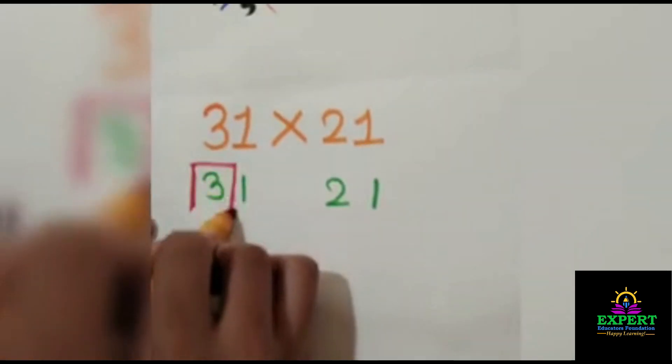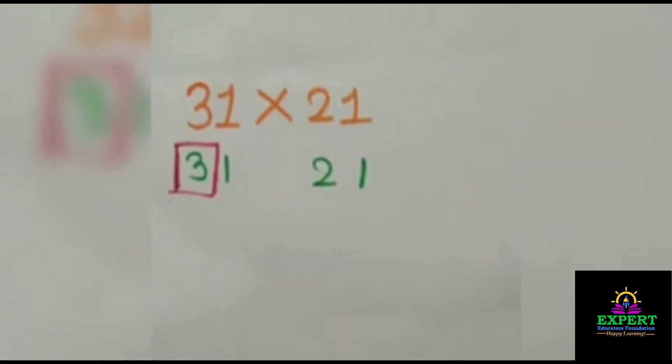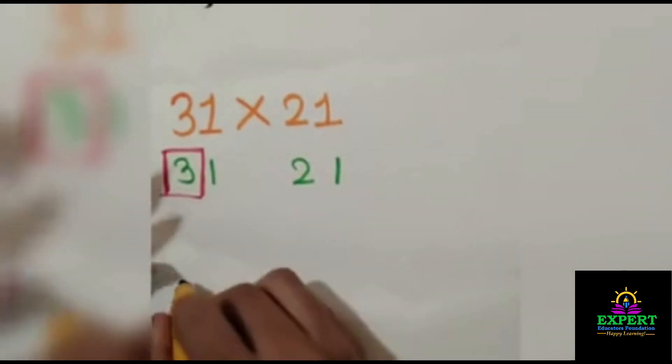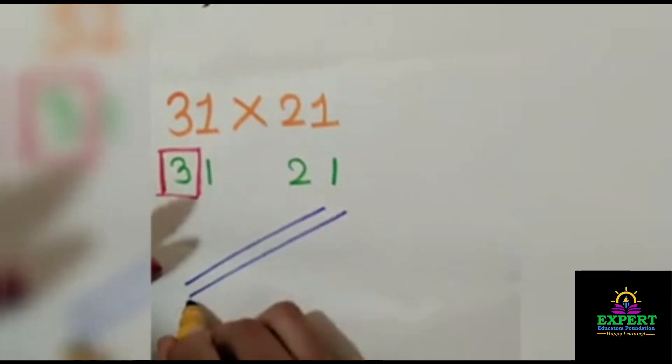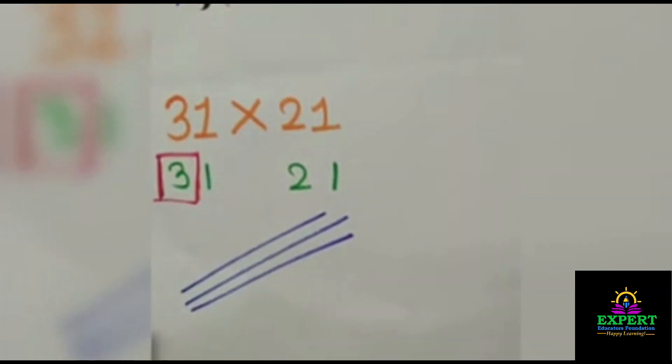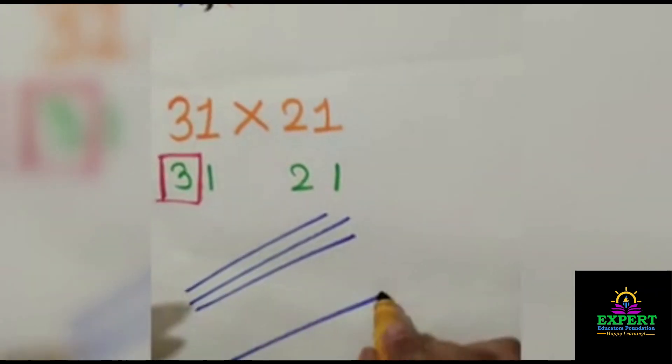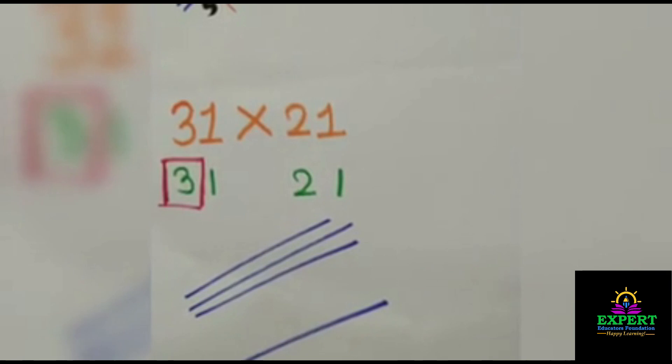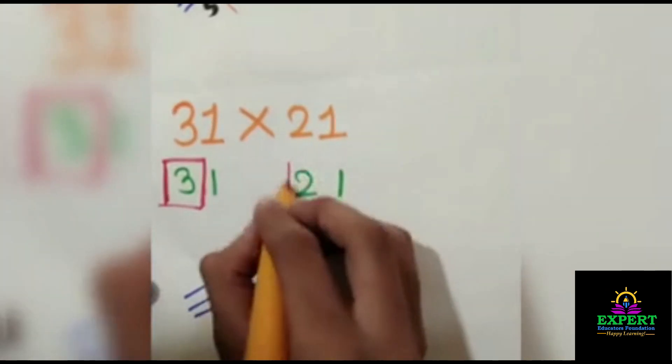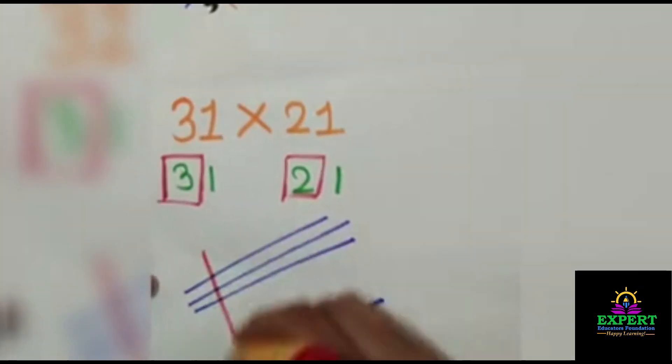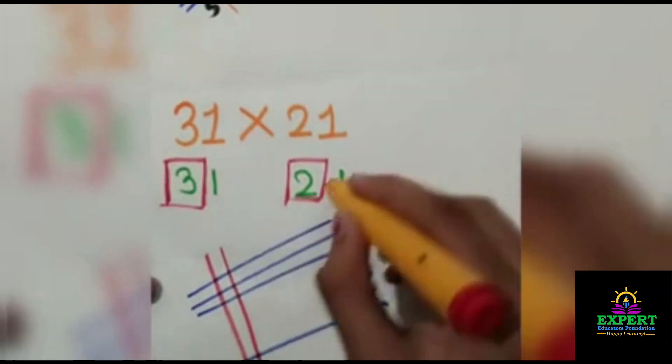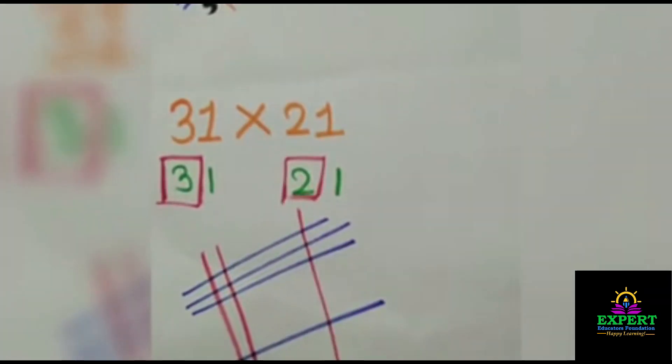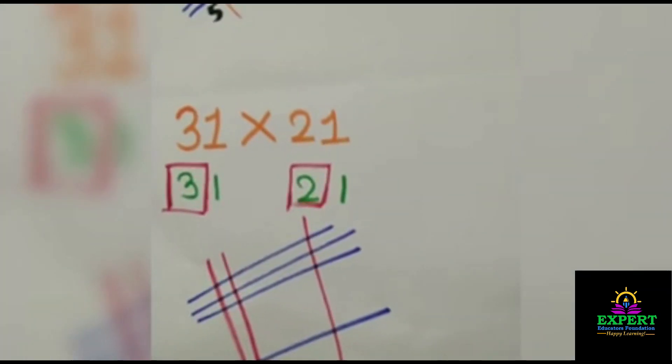So first number given to us is 3. For 3 we will draw 3 lines. For 1 we will draw 1 line. Then for 2 we will draw 2 vertical lines, and for 1 we will draw 1 vertical line. And now let's count the numbers.